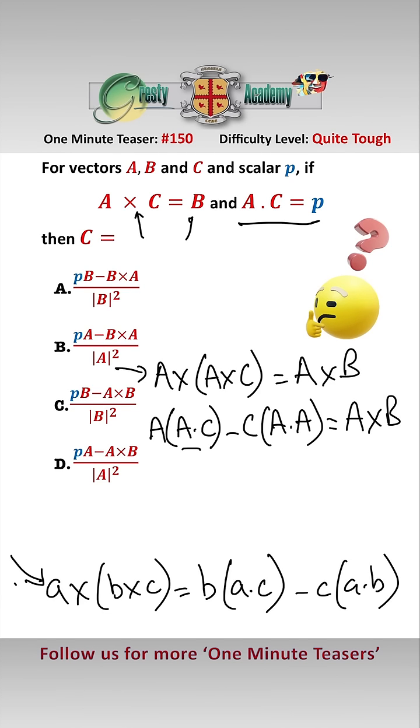Now A dot C we know is P, which is a scalar, so that gives us PA, which is a vector, minus C, and A dot A by the definition of the dot product is mod A squared, equals A cross B.